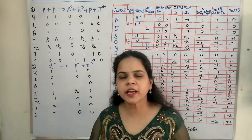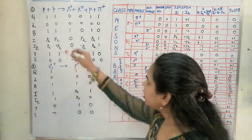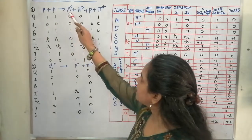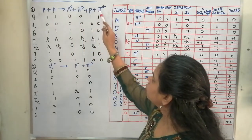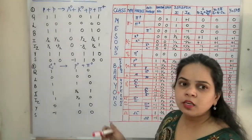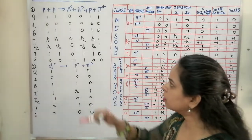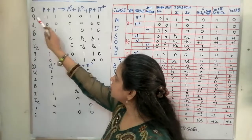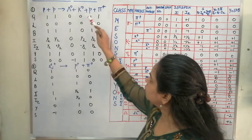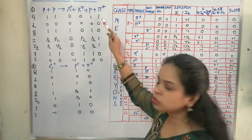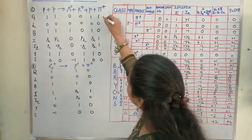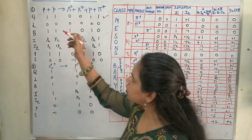Let us now examine some reactions. The first reaction is: proton plus proton produces lambda naught, K naught, a proton, and a pi positive meson. Let us check which conservation laws are satisfied. For charge: the proton has charge +1, and on the product side lambda naught and K naught have charge 0, while proton and pi positive contribute +1. So charge is balanced and conserved.